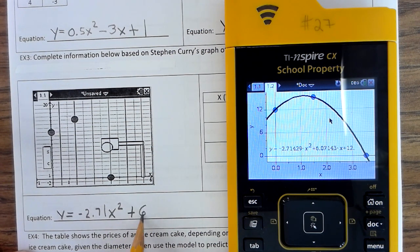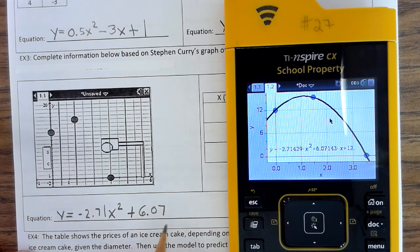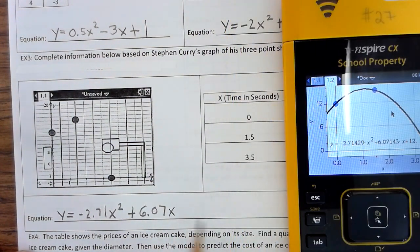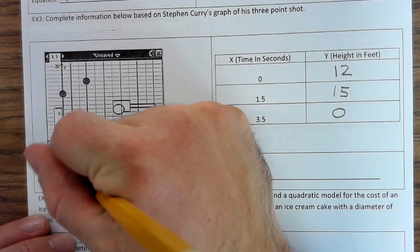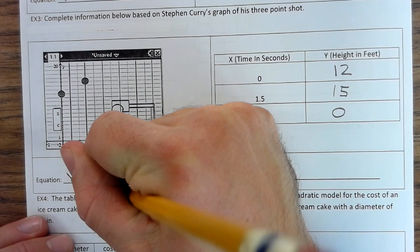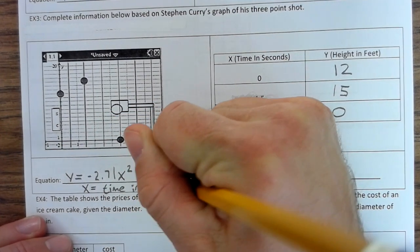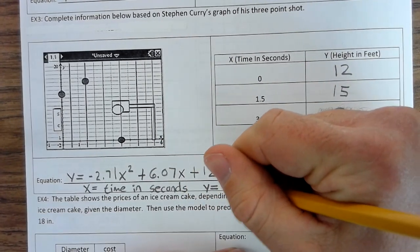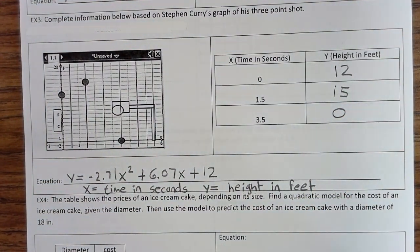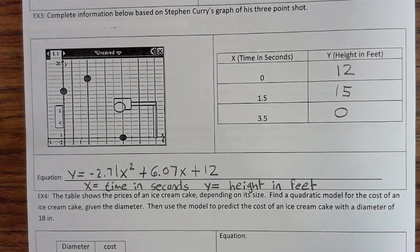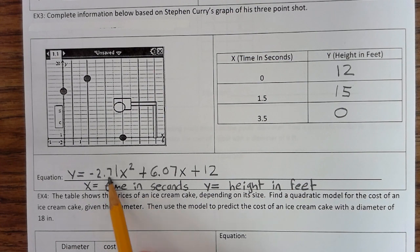So, where X is equal time in seconds and Y equals height in feet. Now, something to think about, this is the initial effect of gravity on the basketball. Here's the initial velocity of the basketball. So, he's shooting the basketball at 6.07 feet per second, and the initial height of the ball was 12 feet.